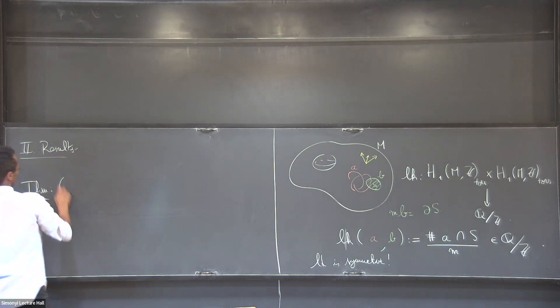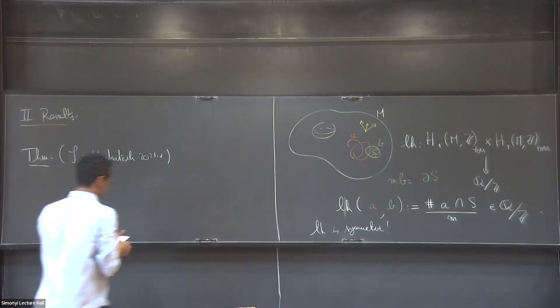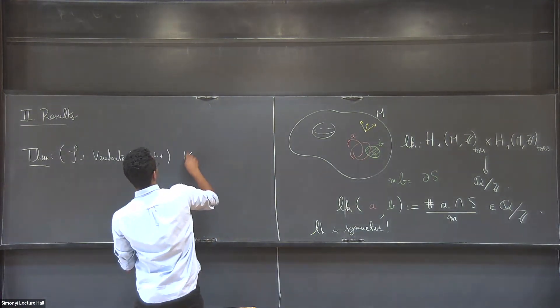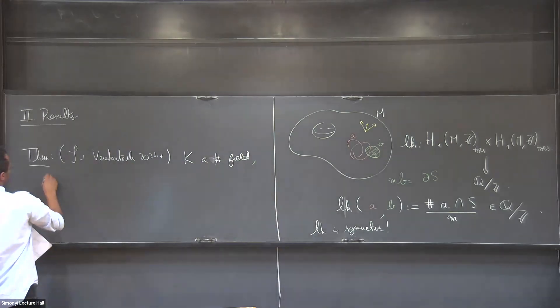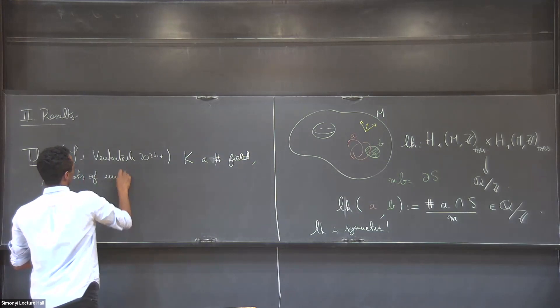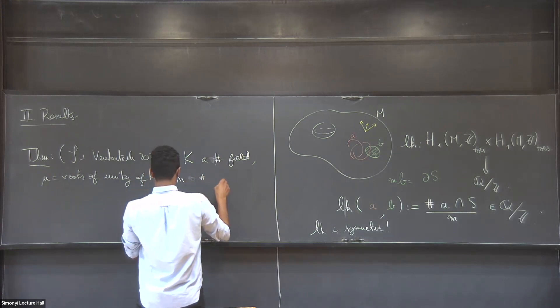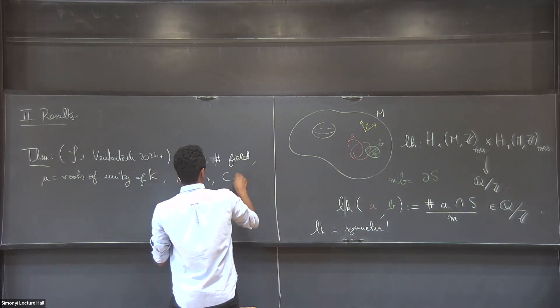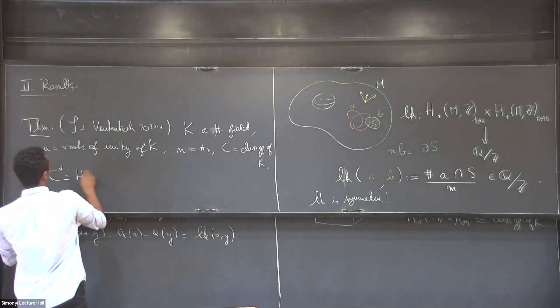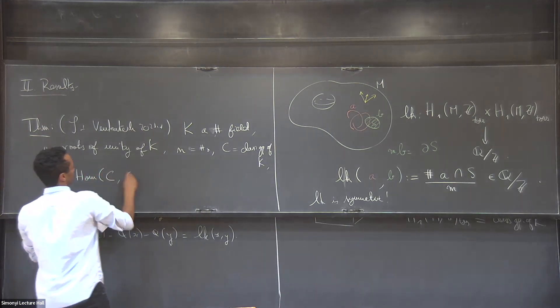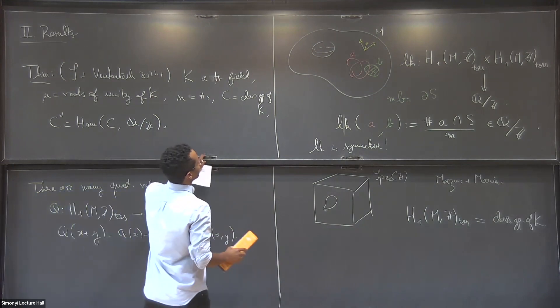And this is the result. So I'll just write the notation on the board. Let K be a number field. Let μ be the roots of unity in K. Let M be the size of the roots of unity, and C be the class group of K. So the dual of the class group is the set of homomorphisms from the class group to Q/Z. And now, our theorem has two parts.